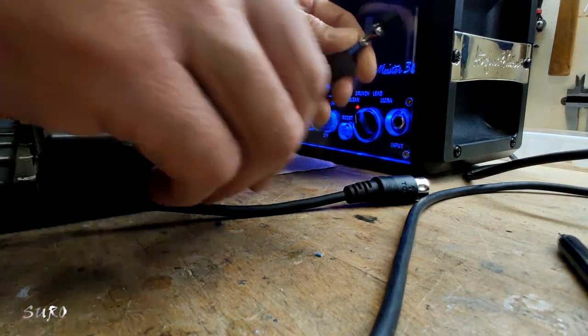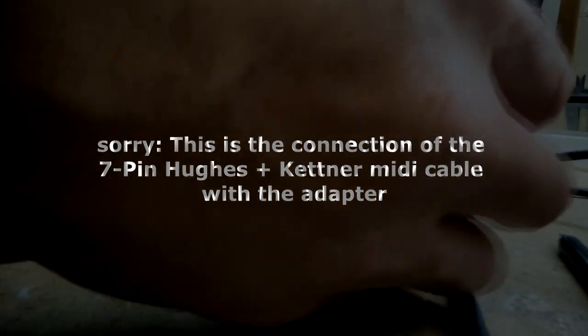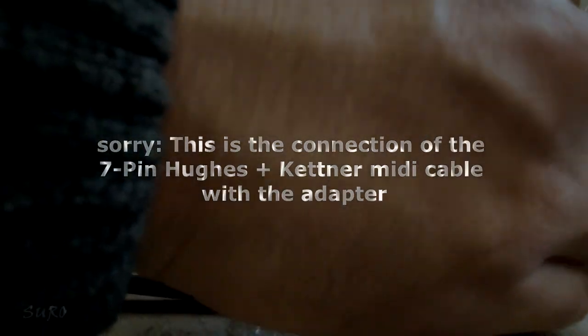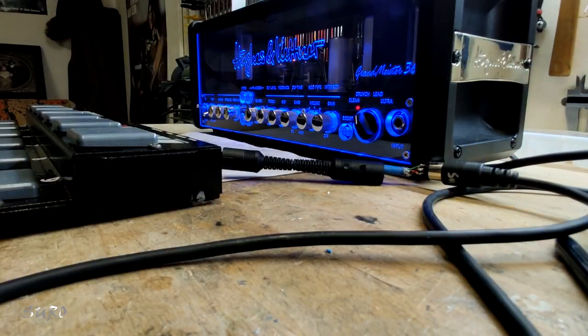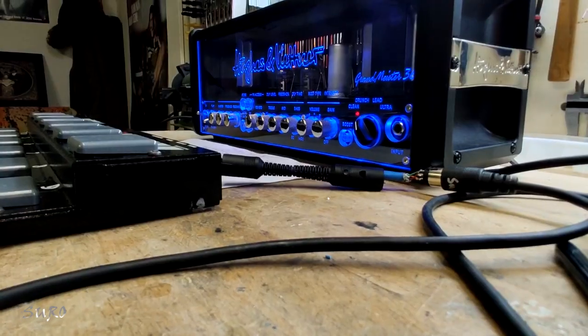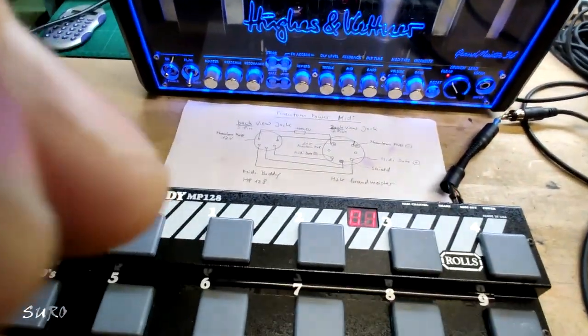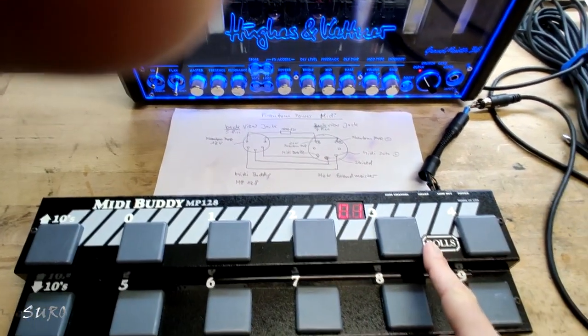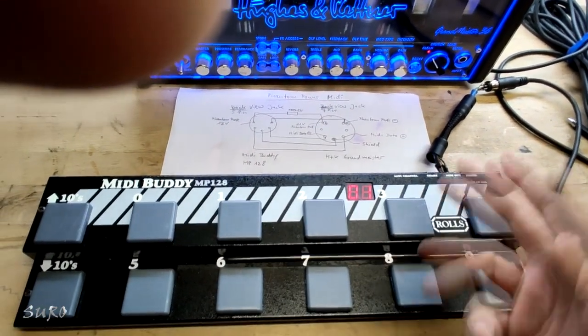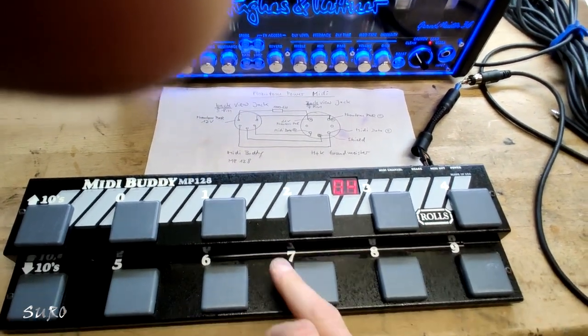So the 7-pin goes right in here. There it is, works perfect. So no extra power unit is needed for the MIDI Buddy connection.